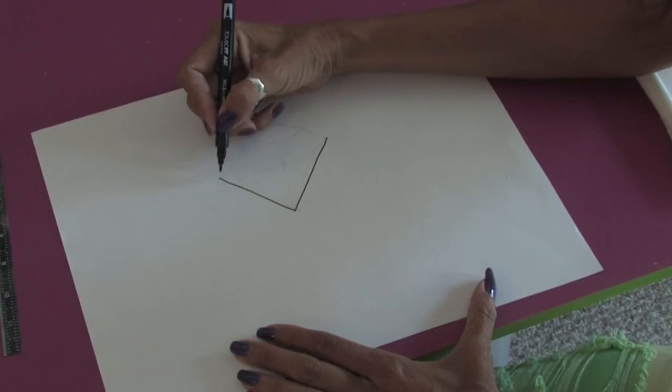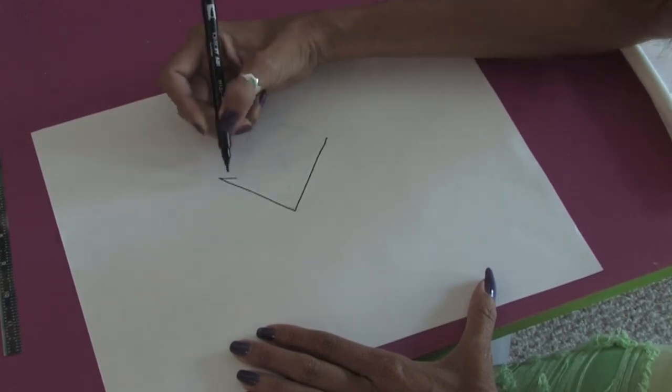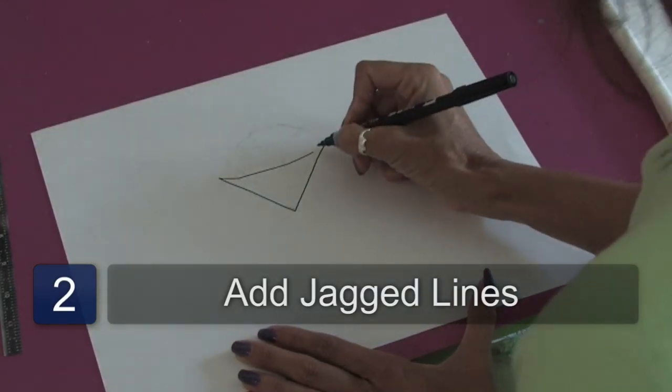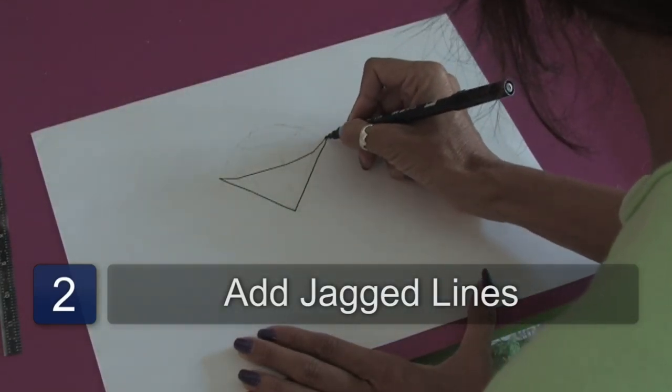But instead of doing a line straight across, we're going to do some jagged lines to show the different facets in the diamond. And we'll connect this line up here.